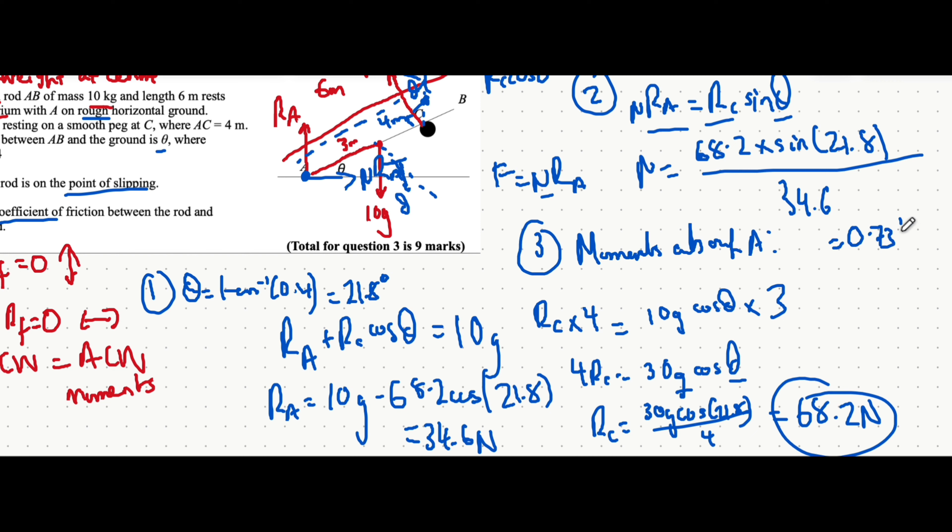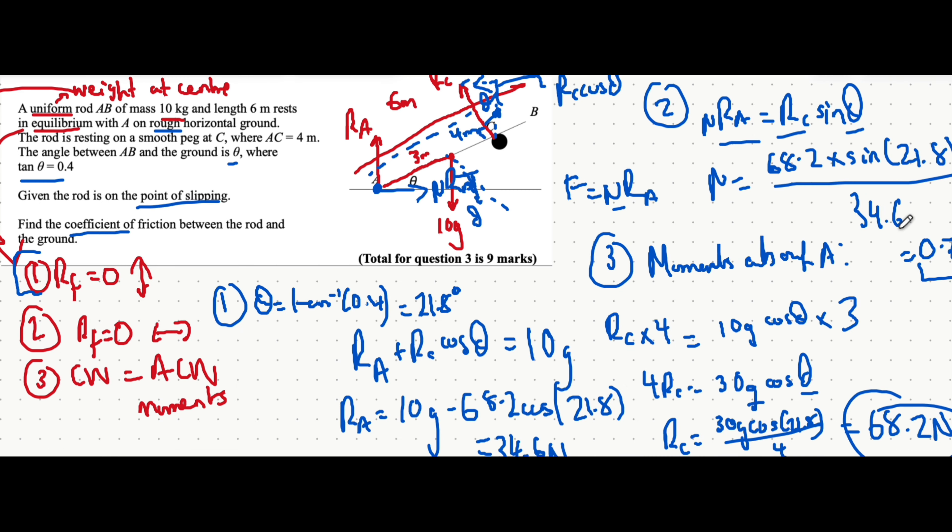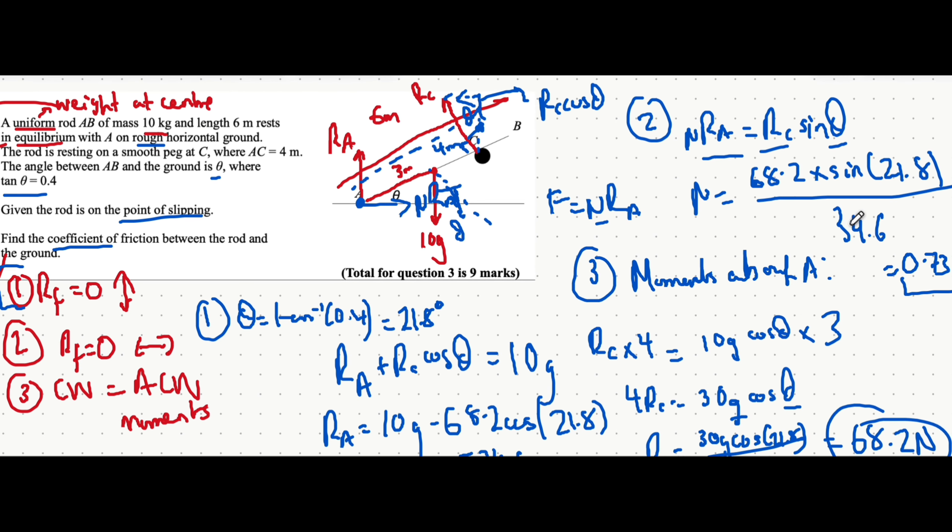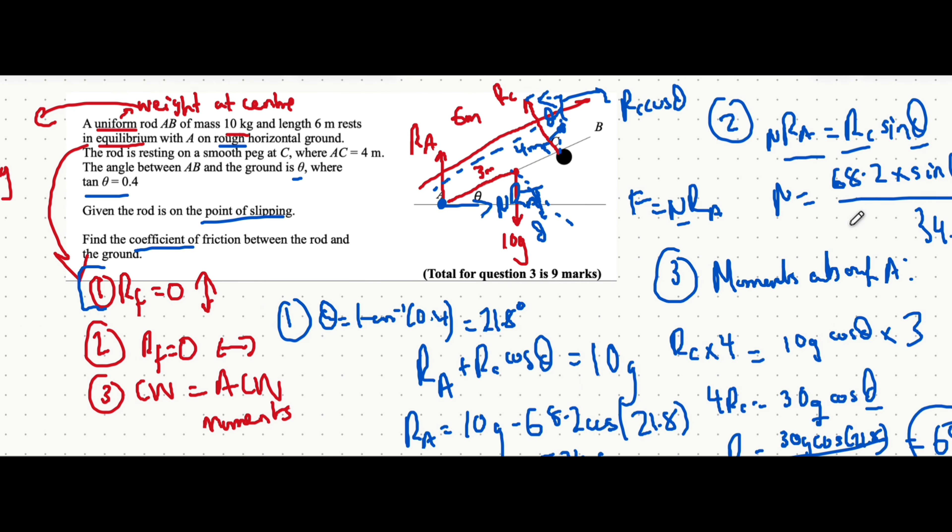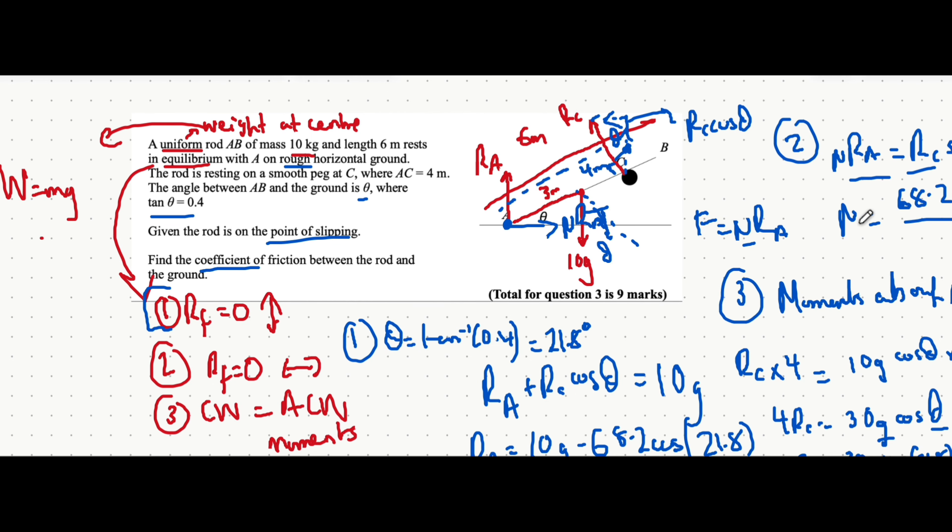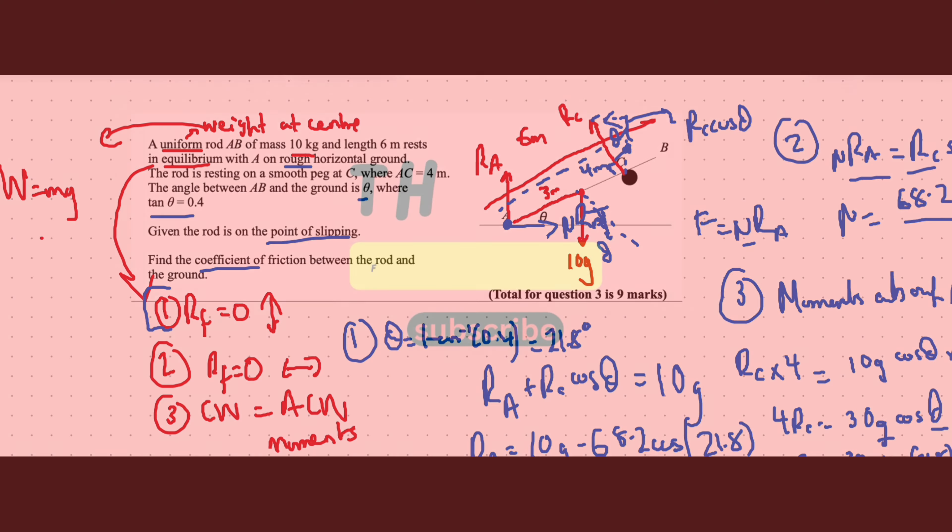Just as a rule of thumb, your coefficient of friction should always be between 0 and 1. That's the final answer and all this working out will definitely get you the nine marks. Thanks for watching the video. Quite a difficult question, but let me know if you have any questions or if you'd like me to go through any similar questions. Thanks for watching.